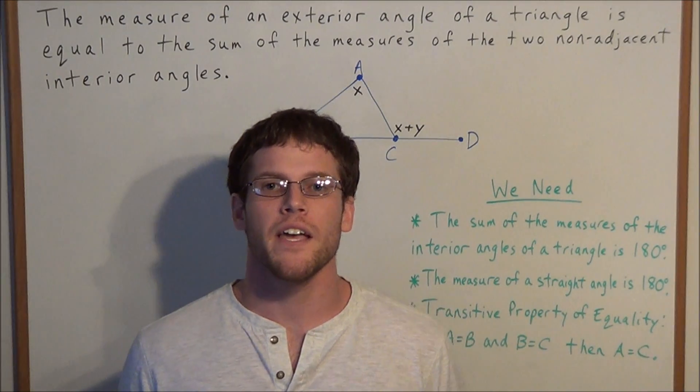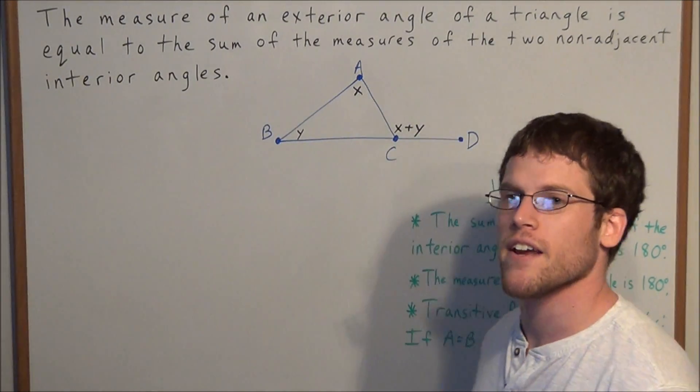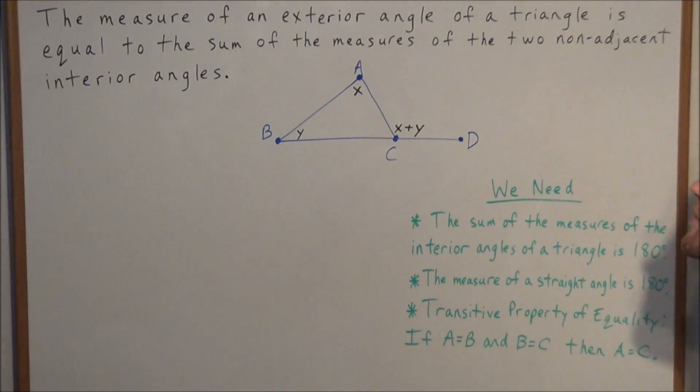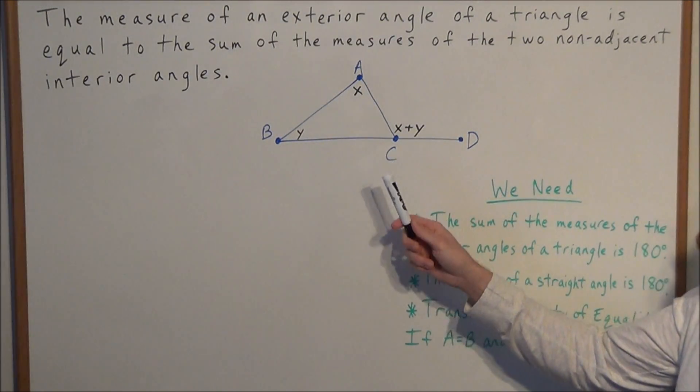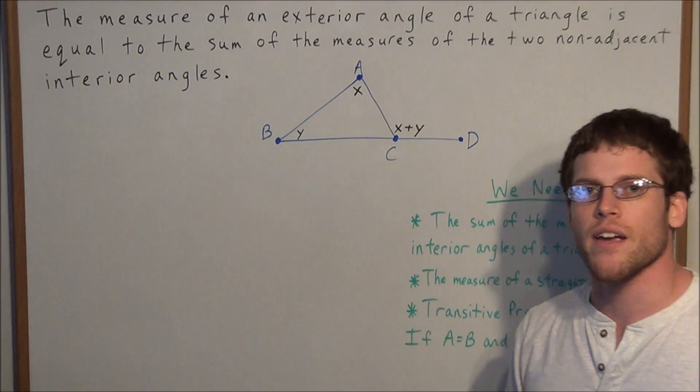Hi, my name is Vincent and today I want to take a look at the exterior angles theorem. The measure of an exterior angle of a triangle is equal to the sum of the measures of the two non-adjacent interior angles.